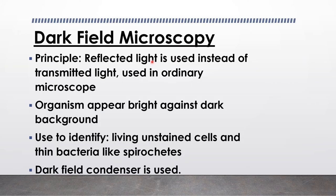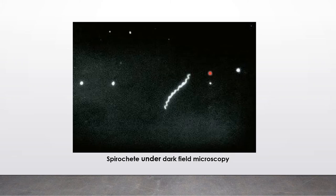Next is dark field or dark ground microscopy. The principle is that reflected light is used instead of transmitted light used in ordinary microscopy. Here organisms appear bright against a dark background. This is used for viewing unstained cells and thin bacteria like spirochetes, which are very delicate organisms that cannot be observed under light microscopy. For them we use dark ground microscopy with a dark field condenser. This picture shows spirochetes under dark ground microscopy — they are spiral-shaped and very delicate, and we can observe them moving against a dark background.